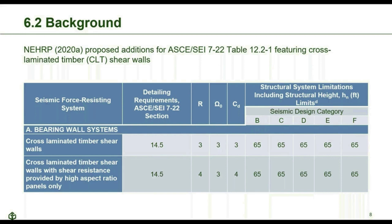Both systems are applicable to a structural height of up to 65 feet for seismic design categories B through F. One important aspect of this table is its reference to Section 14.5 in column 2, which Phil will address later.